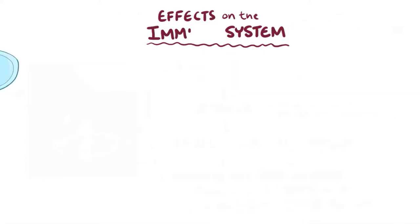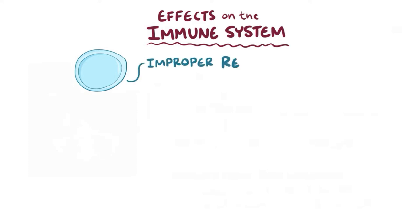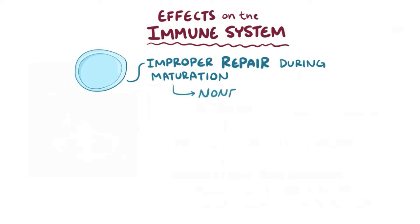Meanwhile, in the immune system, a decrease in functioning ATM causes improper repair of T cells as they go through their maturation process. This can result in T cells that don't function right,